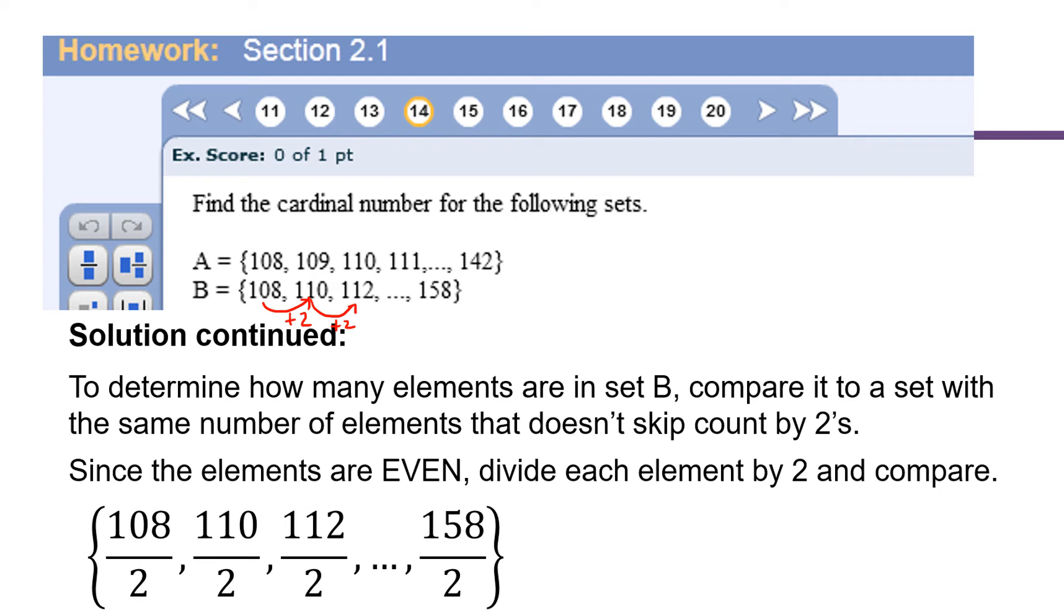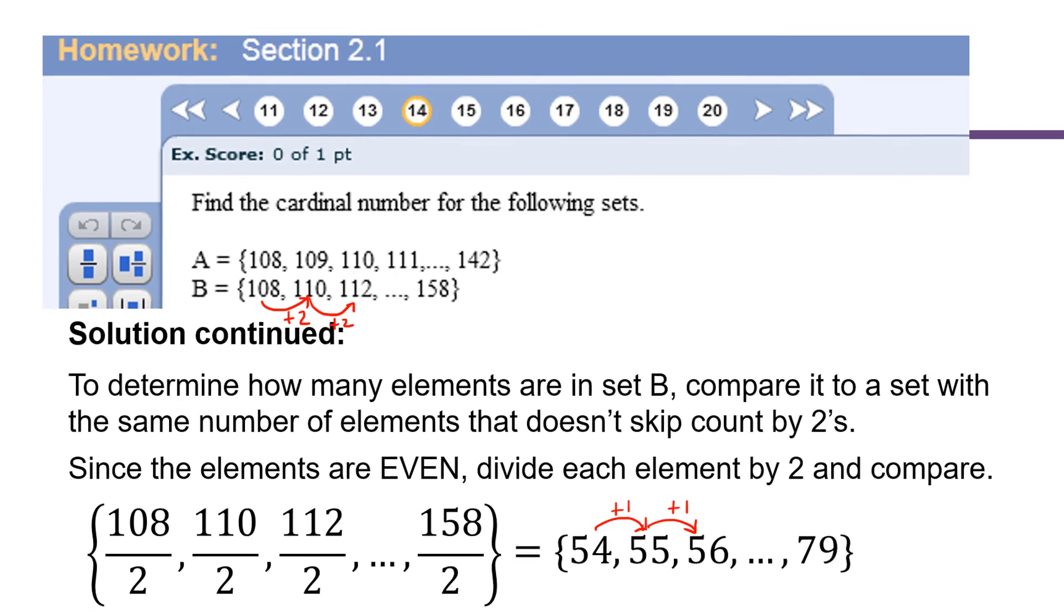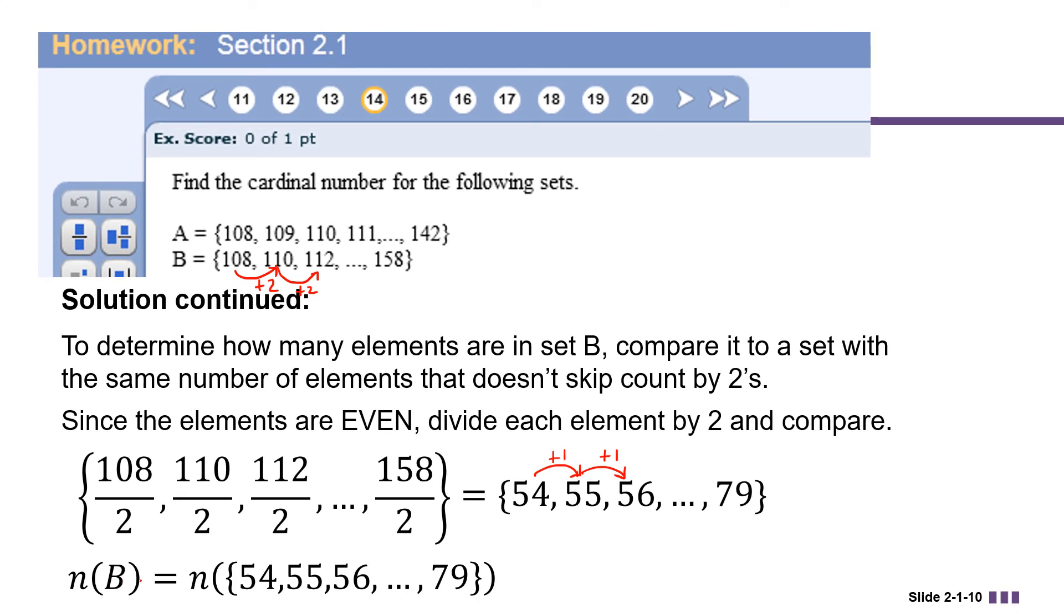Since the elements of B are all even numbers, we can easily divide each element by two and then make our comparison. Here's what I mean. Divide each of the numbers in set B by two. This is going to give us 54, 55, 56, all the way up to 79. The nice thing about this set is, first of all, it's the same number of elements as in set B. And second of all, it's only increasing by one each time. So we can use the same technique we did to find the number of elements in set A.